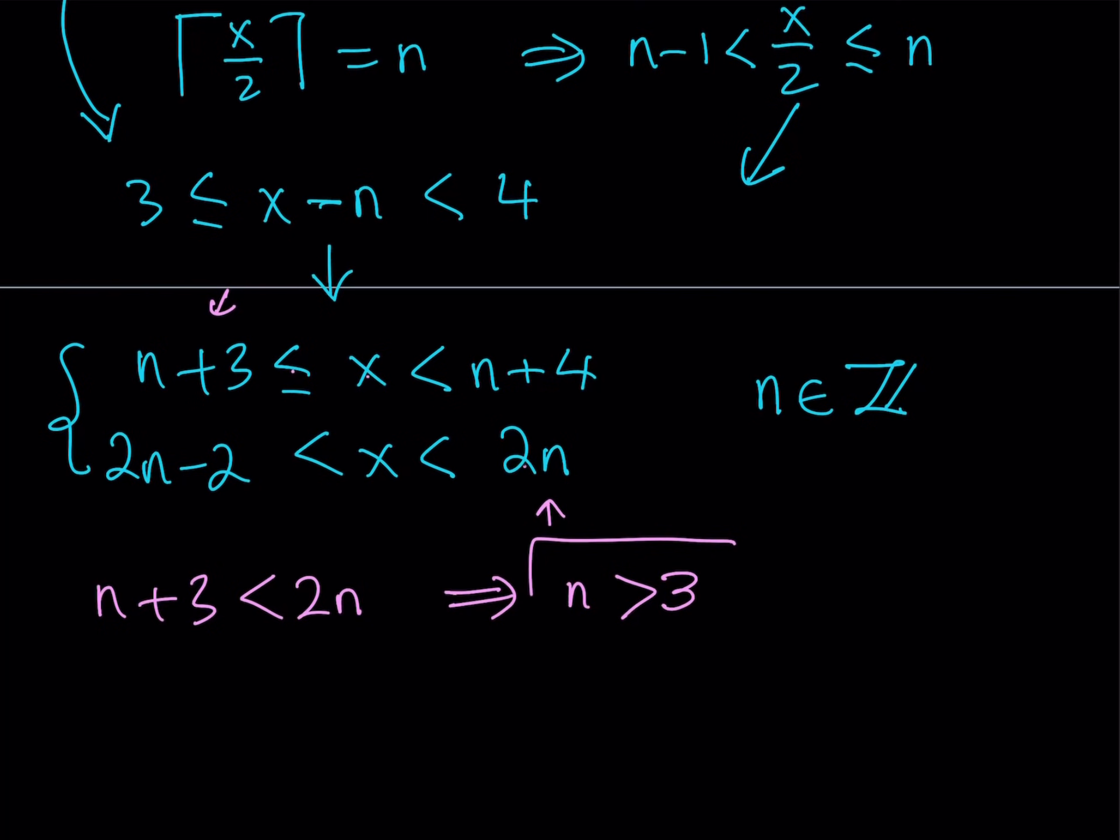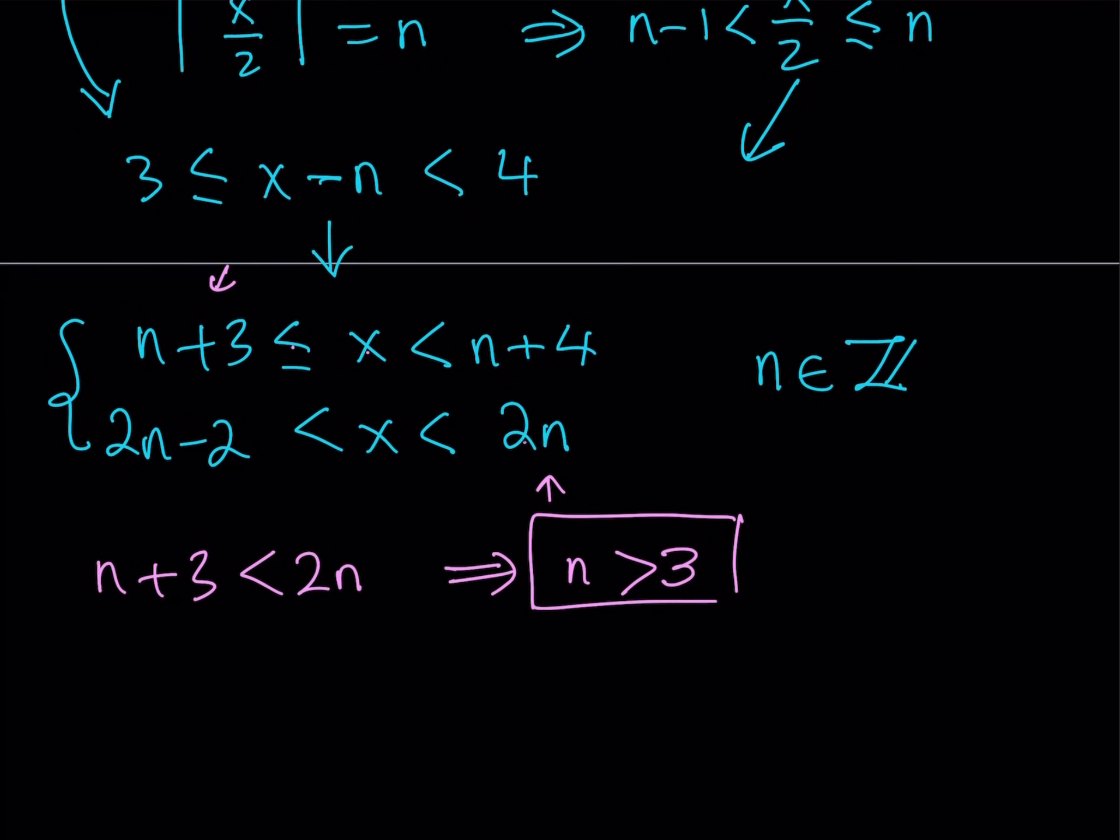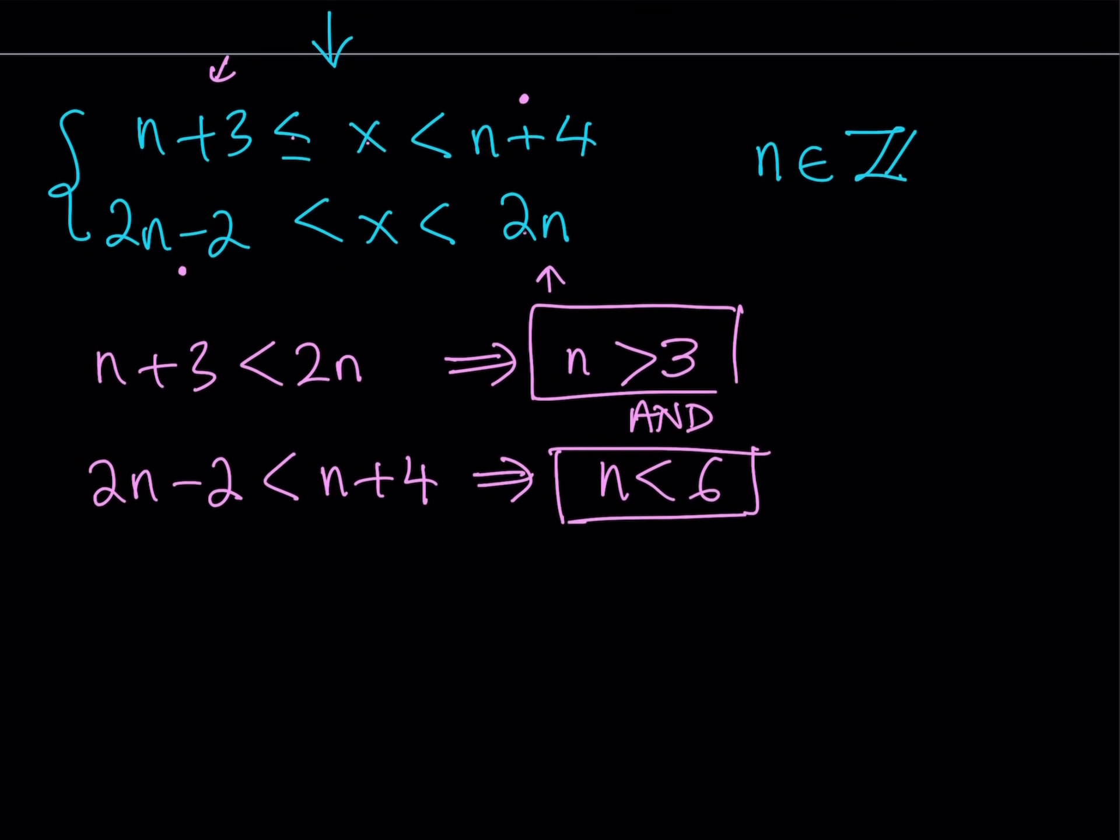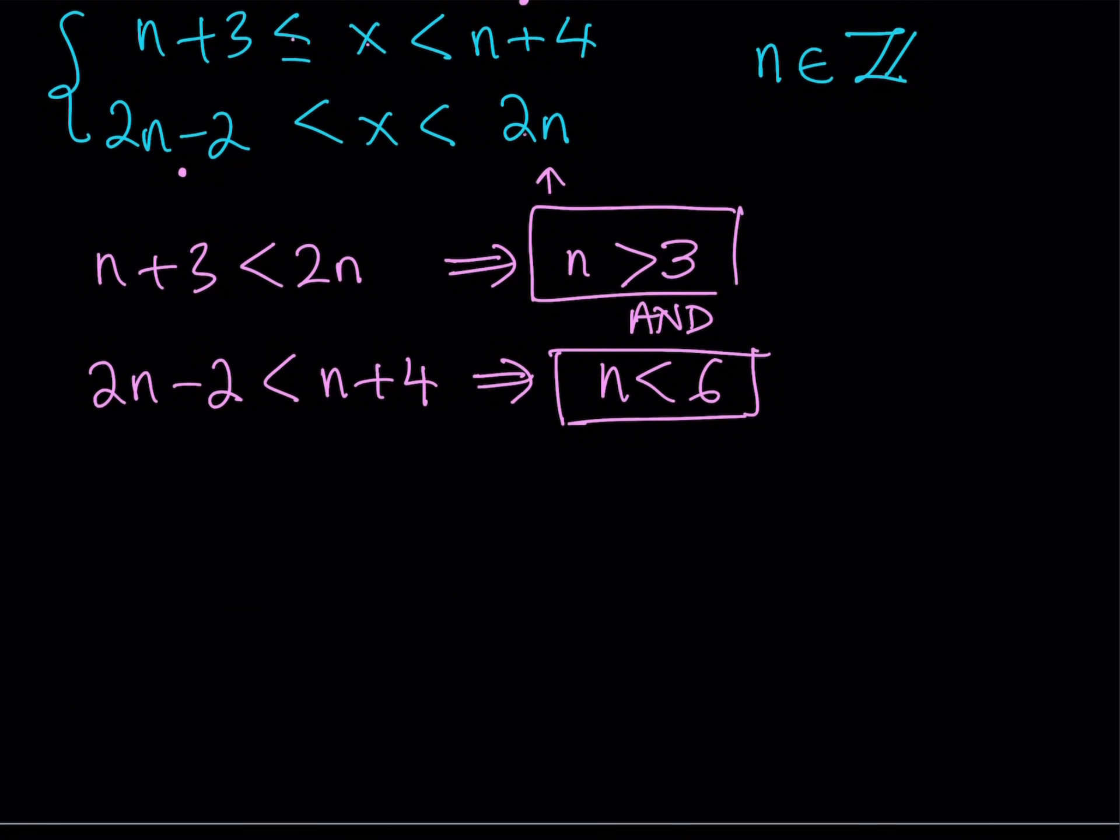And we can say the same thing here. We have a lower bound and an upper bound. In comparing those, I can say that 2n minus 2 must be less than n plus 4. And this implies that n is less than 6. Of course, both of these have to happen at the same time. Otherwise, we're not going to have this system. So this tells you that n can be 4 or 5, right?